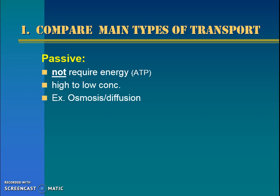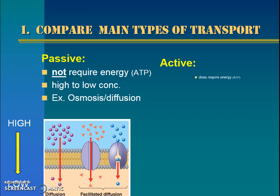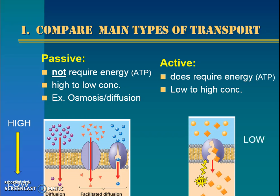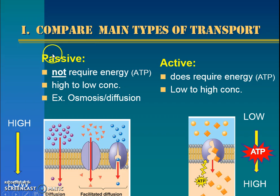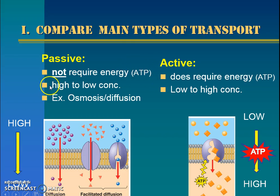We saw this exact same slide in the previous set of notes, so I'm going to look at it quickly. You're welcome to pause and rewrite it, but what I wanted to highlight was the major stuff. There are two types of transport: passive and active. Passive does not require energy — we know the major energy currency in the cell is ATP. Passive transport goes from high to low concentration. Think of this like going down a playground slide. Our examples are osmosis, diffusion, and facilitated diffusion.